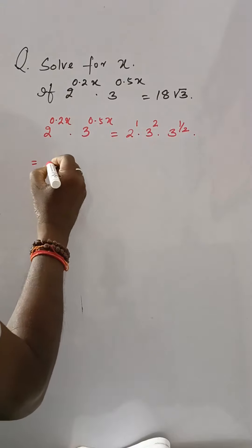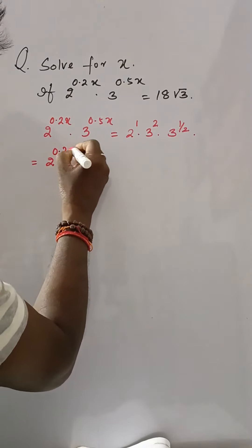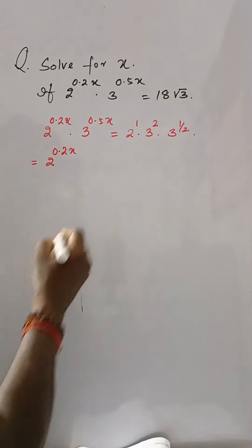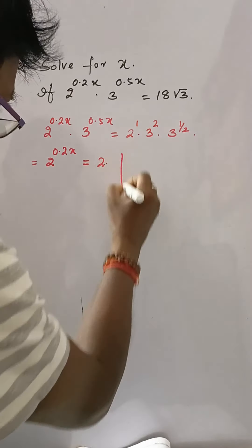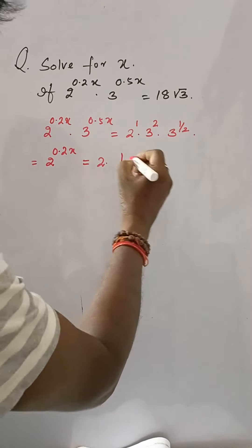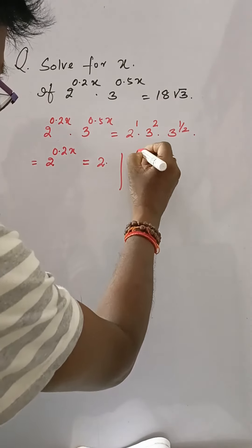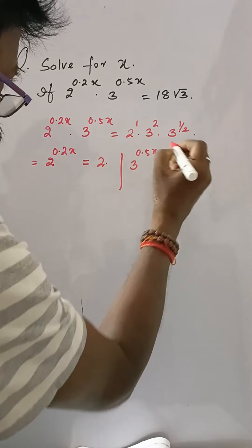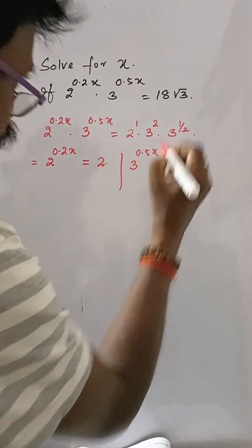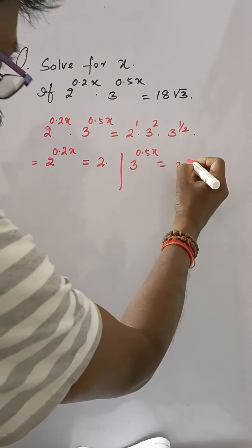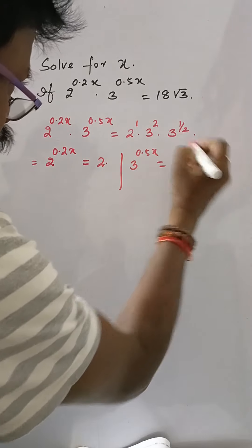Then 2 to the power 0.2x is equal to 2. In the second part, 3 to the power 0.5x is equal to 3 to the power 5 by 2.